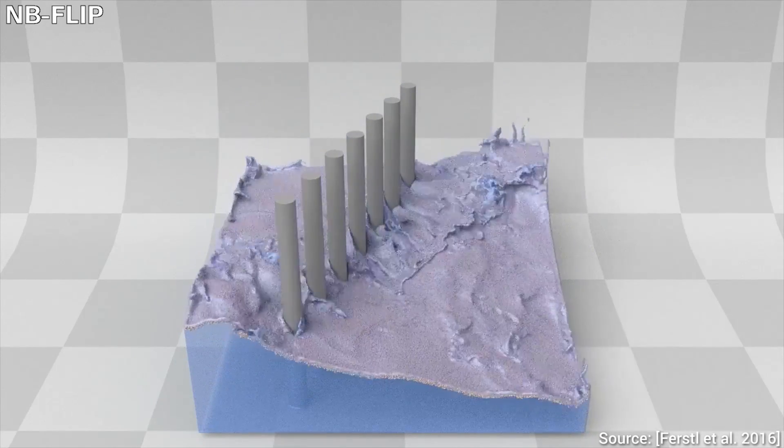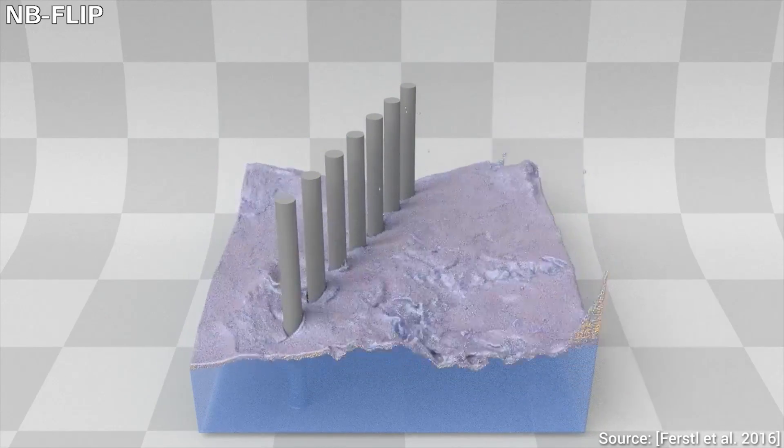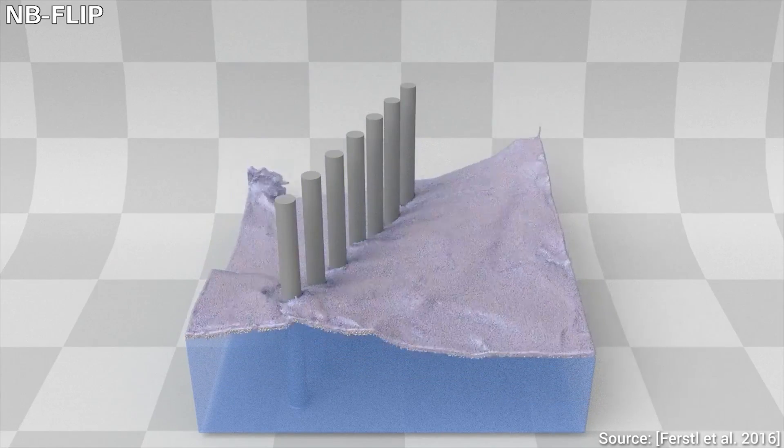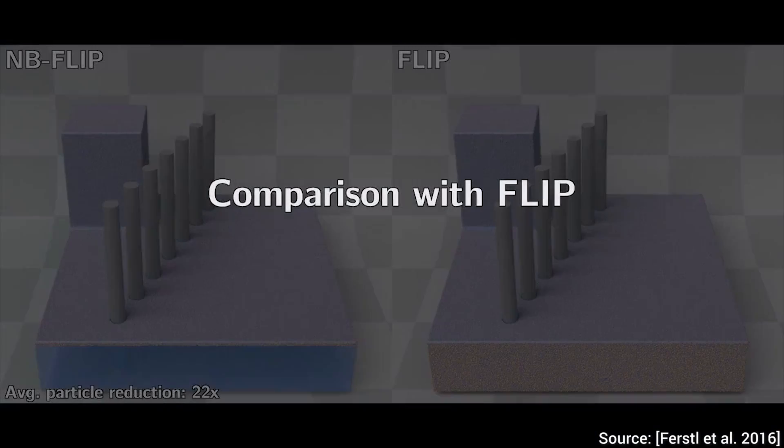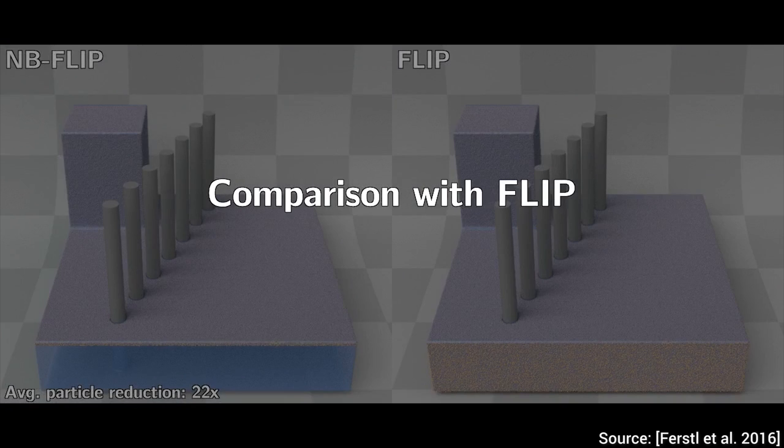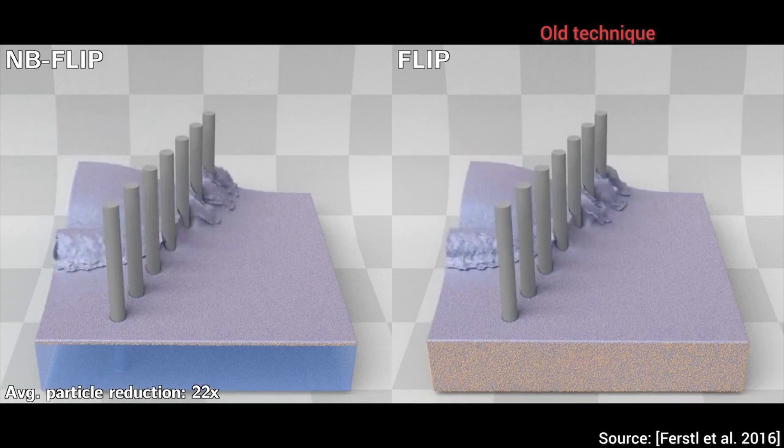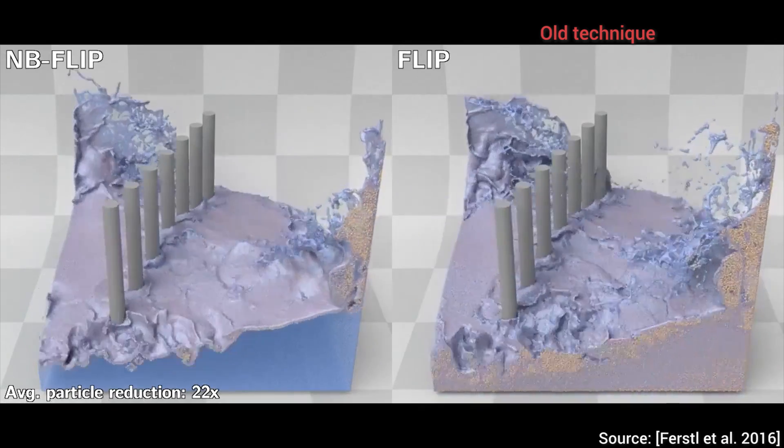The FLIP term that you see in the video means fluid implicit particle, a popular way of simulating fluids that uses both grids and particles. In this scene, the old method uses 24 million particles, while the new technique uses only one million and creates closely matching results.